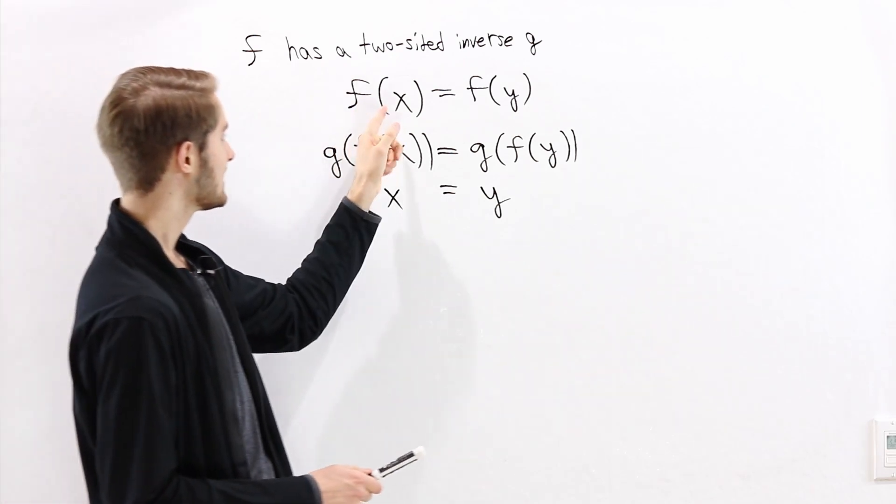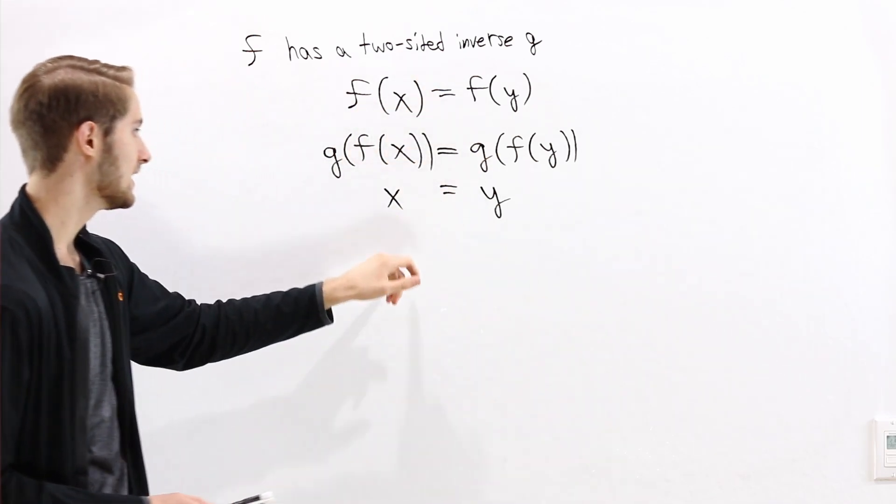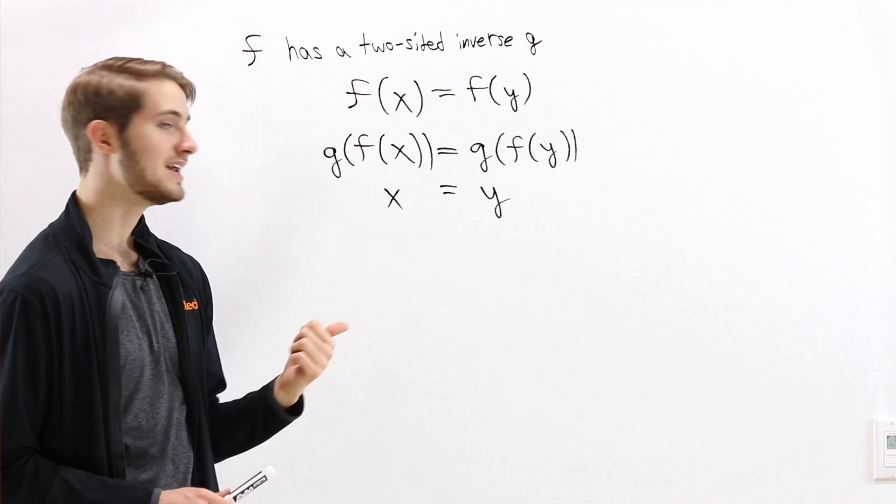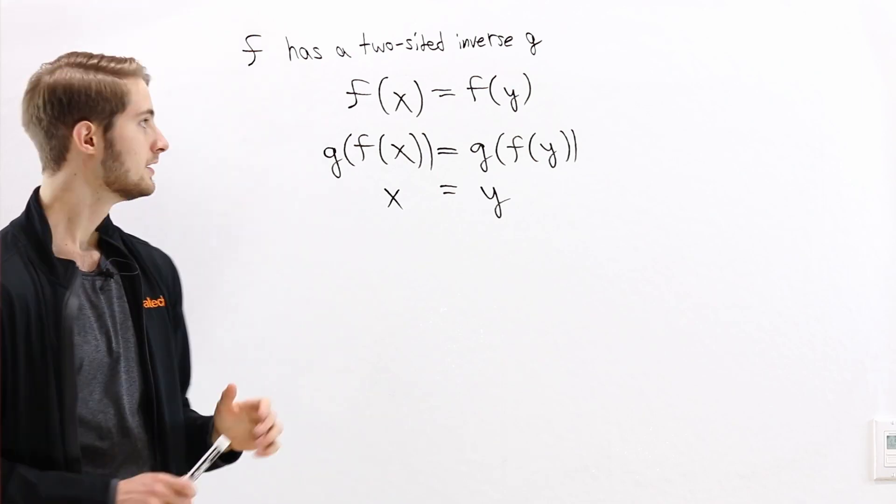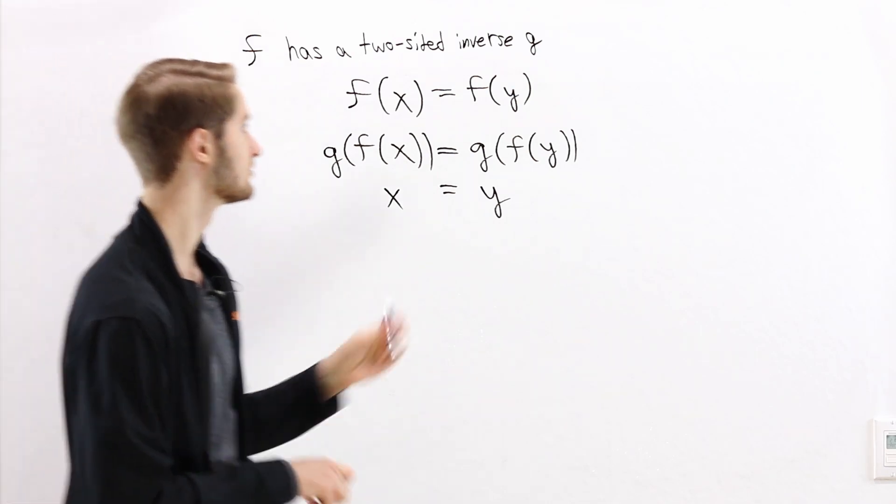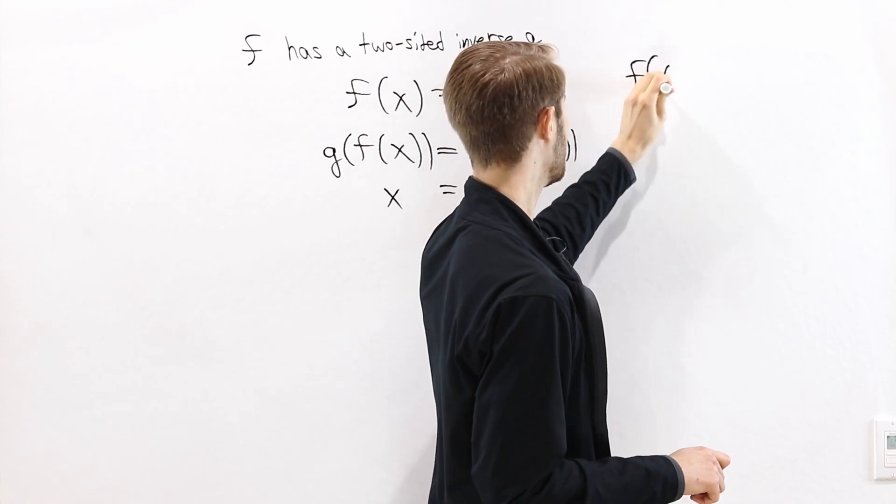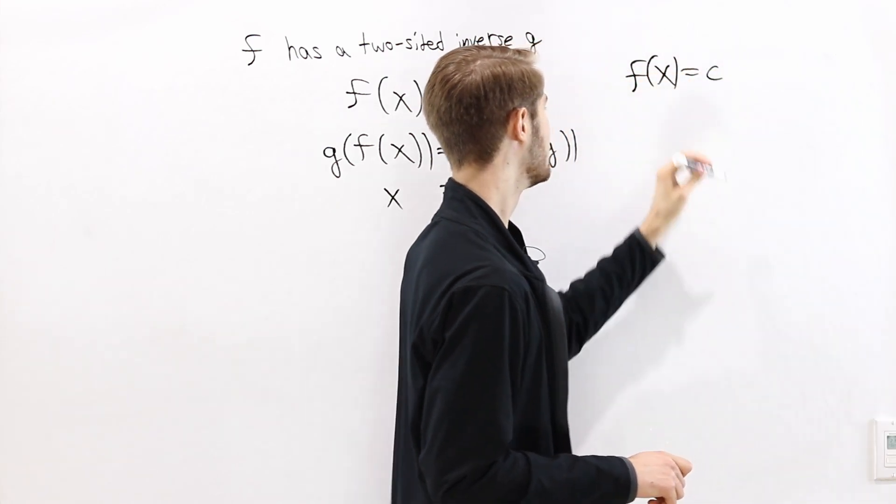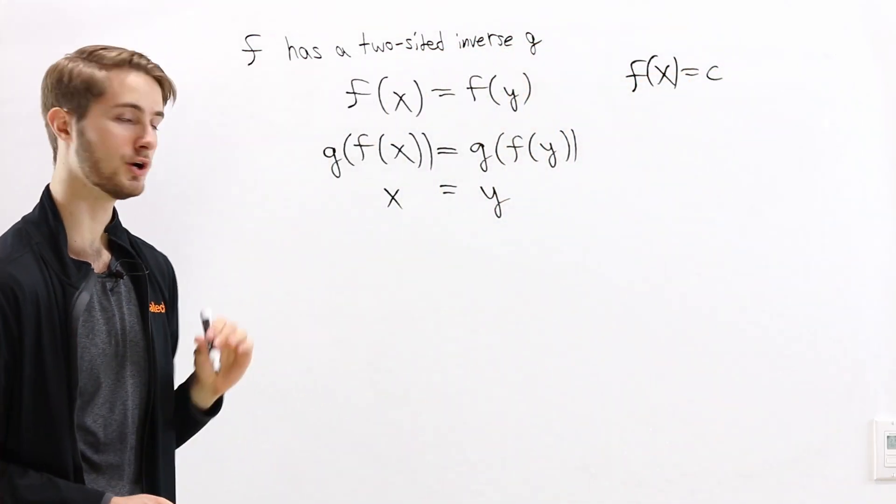So we've shown that f of x equals f of y implies x equals y, which means that f is injective. Because f is injective, the equation f of x equals c, for some fixed value of c in the codomain,